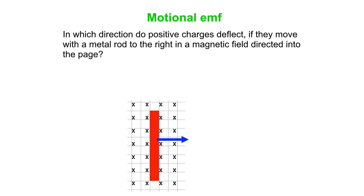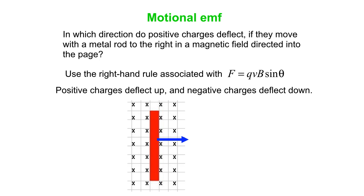So if you imagine that there are positive and negative charges moving with that piece of metal, then you can do the right-hand rule on the charges that are moving along with the rod. And what you should find is that positive charges deflect up toward the top, and negative charges would deflect in the opposite direction. They would go down.